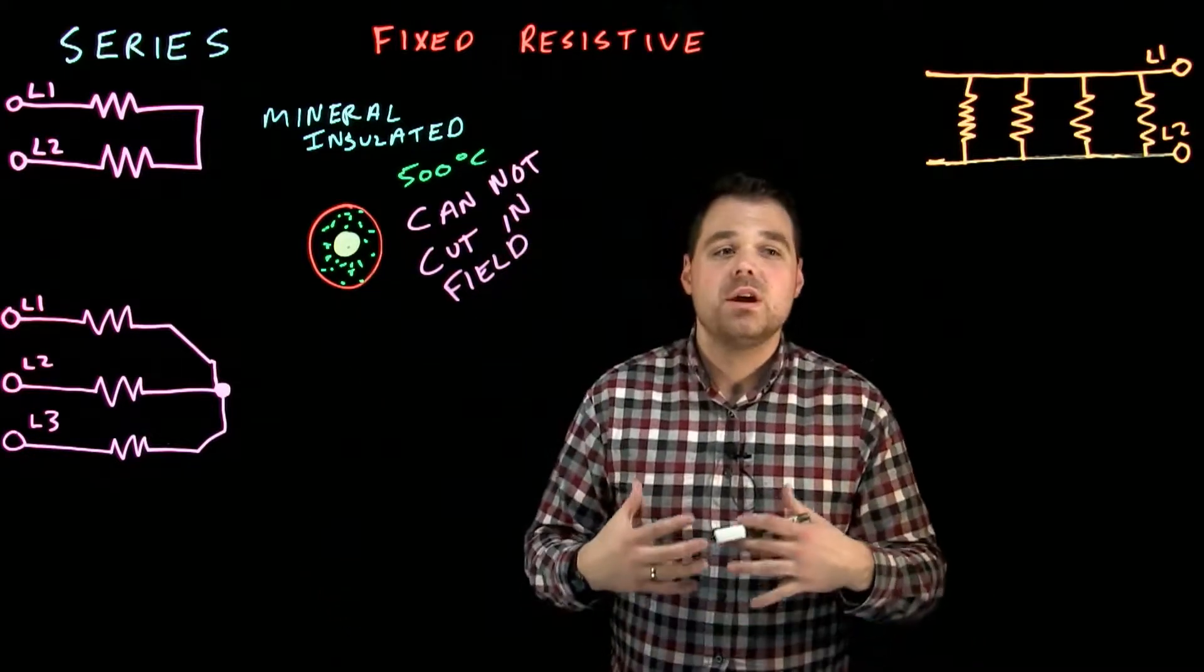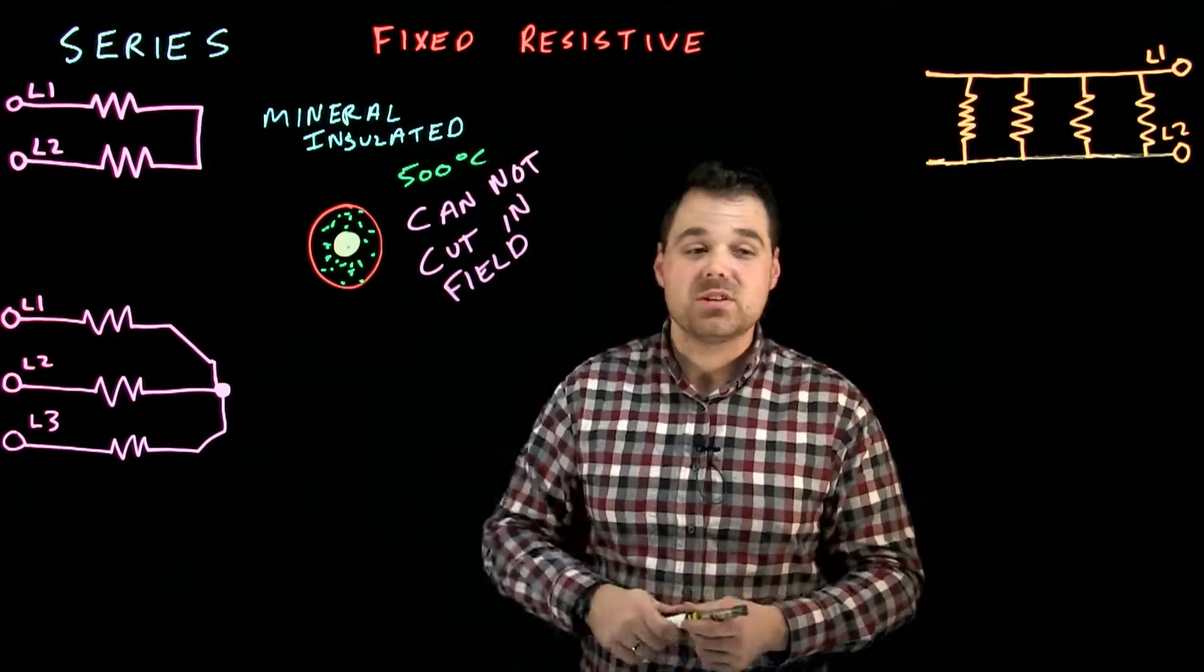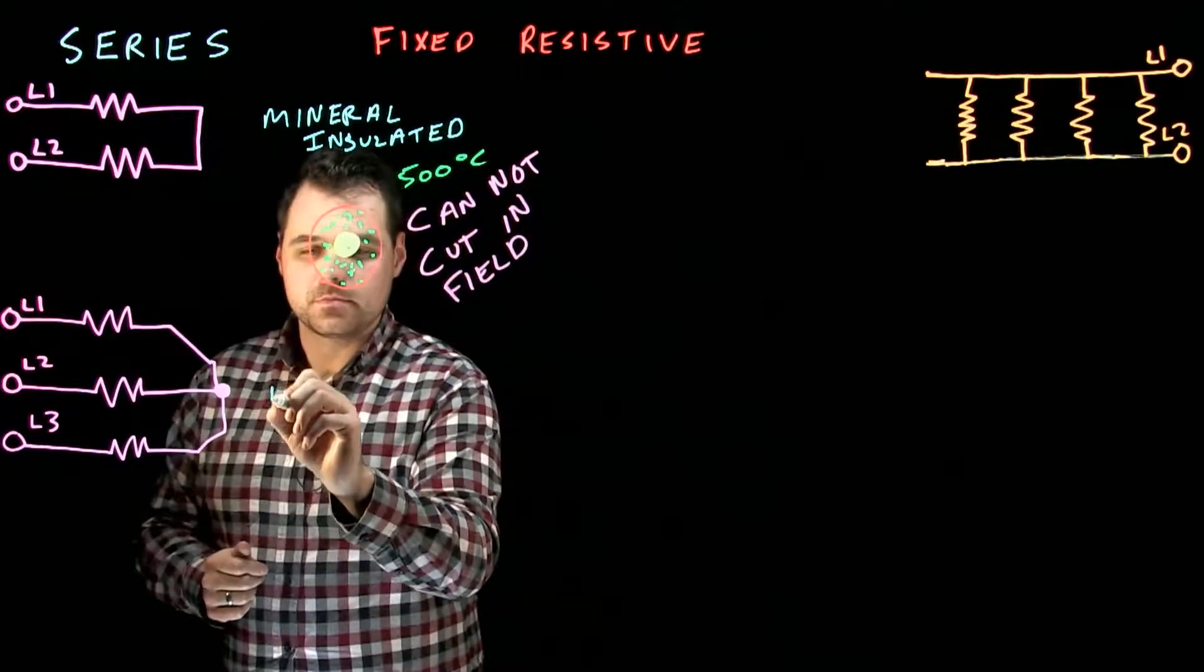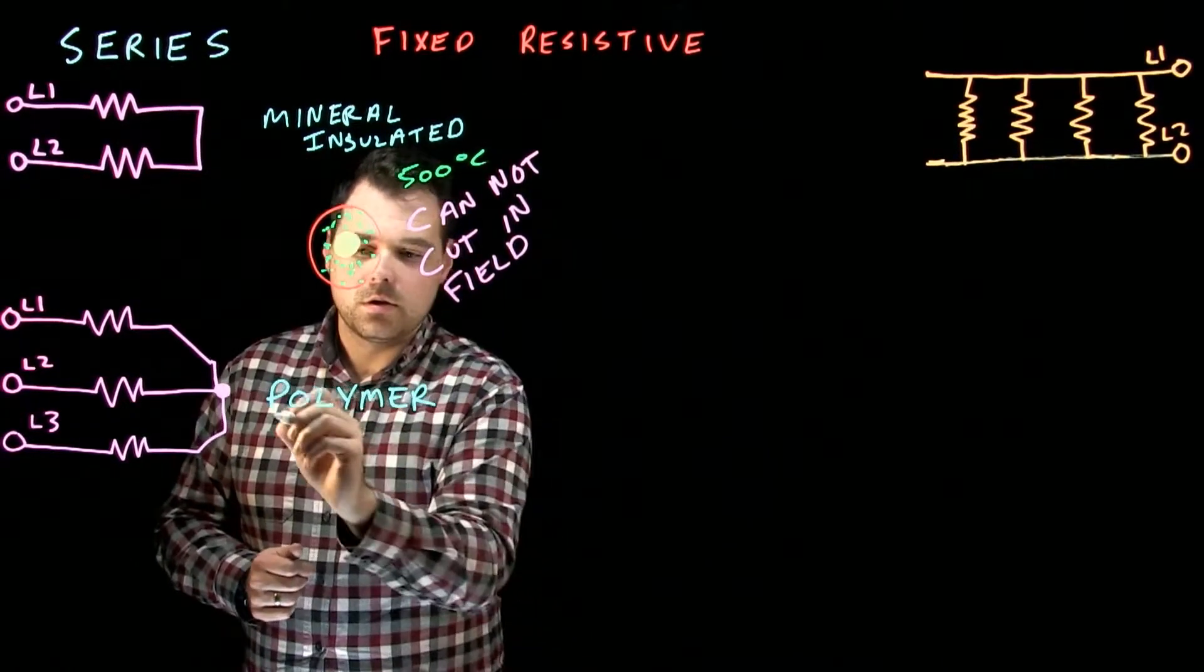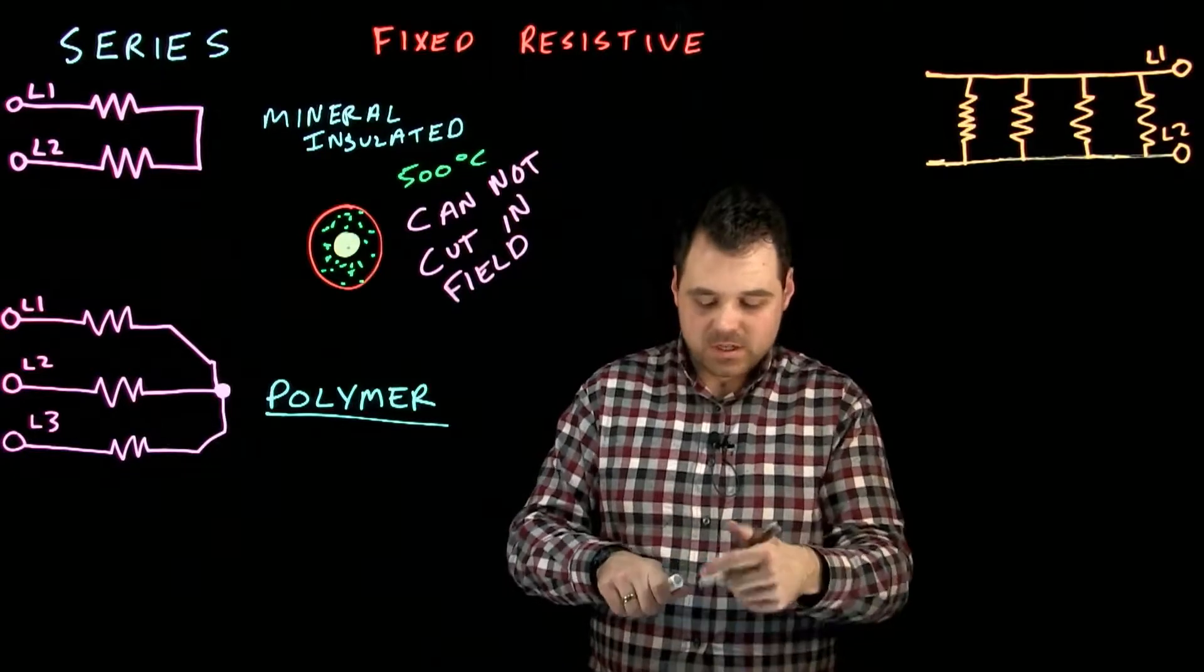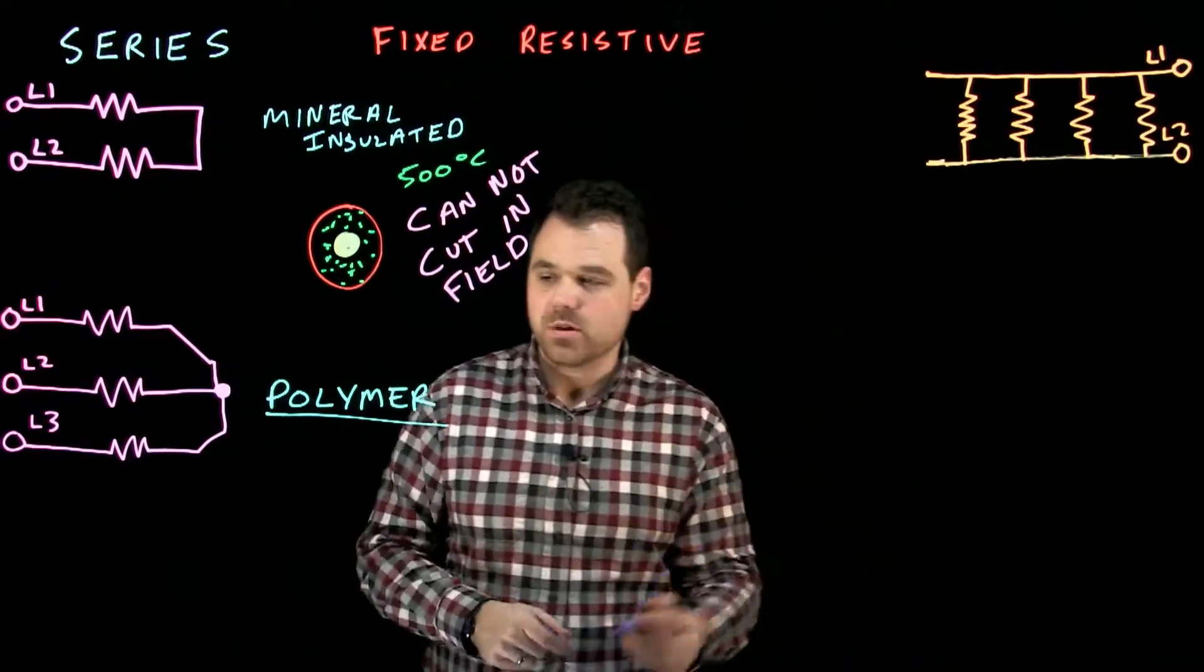The other type that we want to talk about that we can use for this fixed resistive, more specifically the series fixed resistive, is a polymer type. Now, this polymer type, it can't get quite as hot, but there are some things about it that make it a little more useful in certain situations.